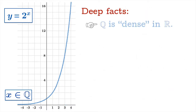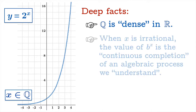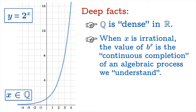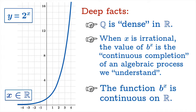Here are some deep facts. Q is dense in R — any irrational number you pick on the real number line can be approximated by a sequence of rational numbers converging to it; just take its decimal expansion and chop it off at various places. When x is irrational, the value of b to the x can be thought of as the continuous completion of an algebraic process we understand. So if you're wondering what it means to take 2 raised to an irrational power, think of it as a continuity argument — looking at the graph and seeing what you're led to. And once you've defined b to the x for all real numbers, b to the x is in fact a continuous function on R.